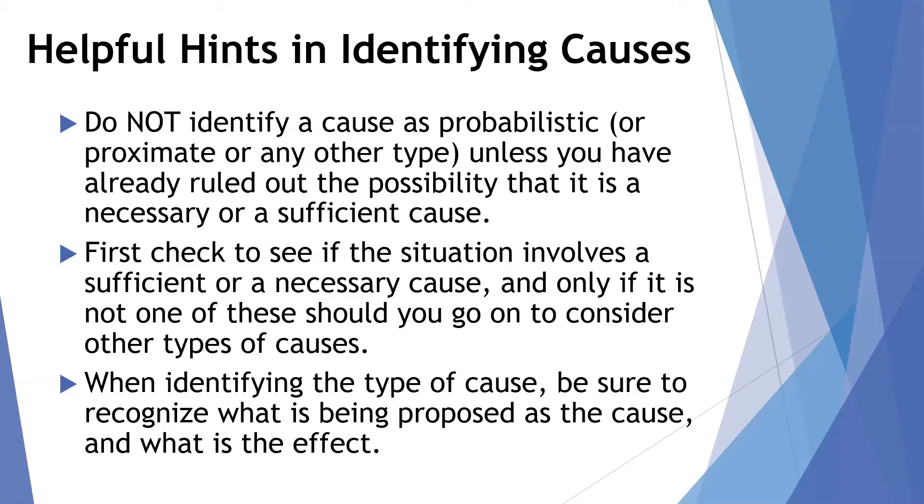Now, one other thing, when we're identifying the type of cause, be sure to recognize what's being proposed as the cause and what is the effect. So students sometimes get those blurred, and sometimes these can be stated as negatives. You have a negative cause, like a lack of sleep, or a negative effect, like not showing up for class, things like that. Make sure you're really clear on what is the cause and what is the effect. You have to do that in order to categorize the cause in the proper way.